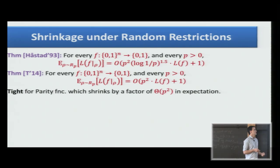Another thing is that the result is tight. Because for the parity function, the formula size is n squared. After we apply this random restriction, we are left with a parity of roughly p times n variables, so it's p squared n squared. So we shrunk by a factor of p squared. We can't hope to get something better here.